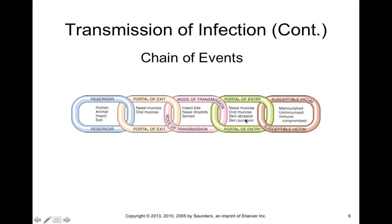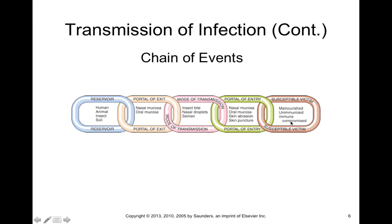Just because you're exposed to an infectious microorganism doesn't necessarily mean you will be infected or that infection will lead to disease. There is a degree of susceptibility required. Susceptible victims are more likely to become infected once exposed. Things that increase susceptibility include malnourishment, being unimmunized — such as not receiving the MMR vaccine — being immunocompromised due to old age, a genetic defect in the immune system, or AIDS.